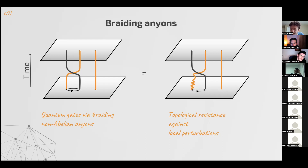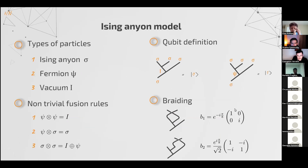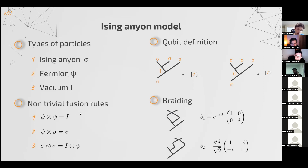One of the most popular models for topological quantum computation is based on the Ising anyon model. In this case, we have three types of particles: the Ising anyon σ, a fermion ψ, and the vacuum I. We have the following non-trivial fusion rules. The most important is that if you fuse two sigmas, you have two different channels: you might get the vacuum or you might get a fermion.